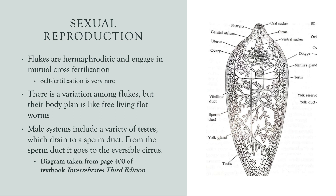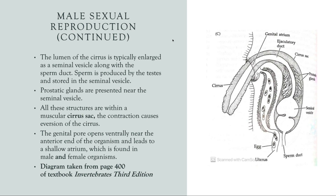Over to the right, we have a male fluke. The male contains testes, which have all these branching structures, which drain into a sperm duct — this very narrow line that goes all the way up to the eversible cirrus, which is here at the top. Continuing on the male sexual reproduction, the lumen of the cirrus is typically enlarged as a seminal vesicle along with the sperm duct.